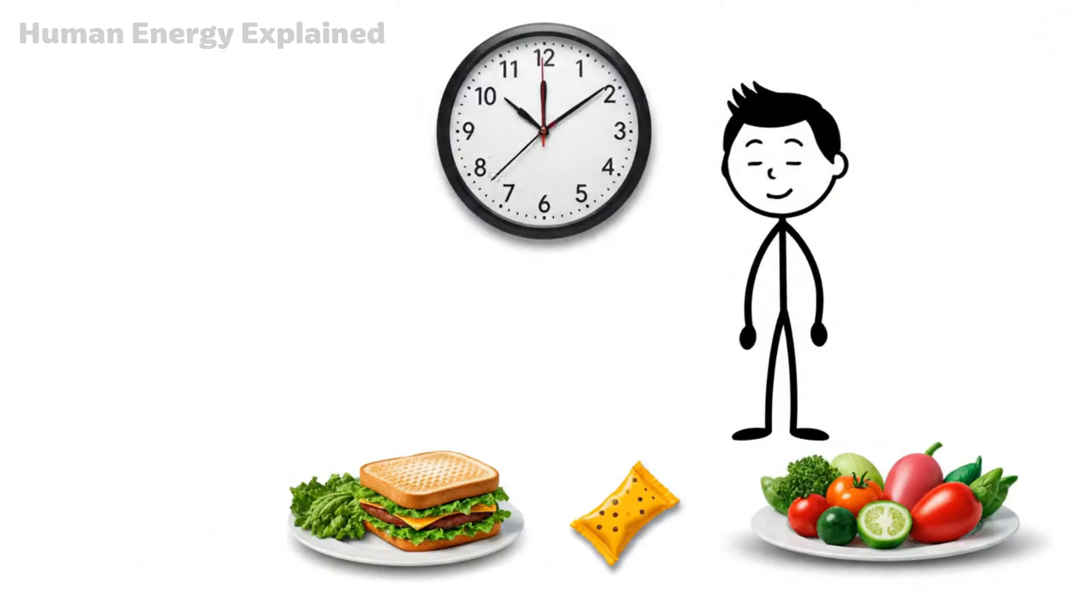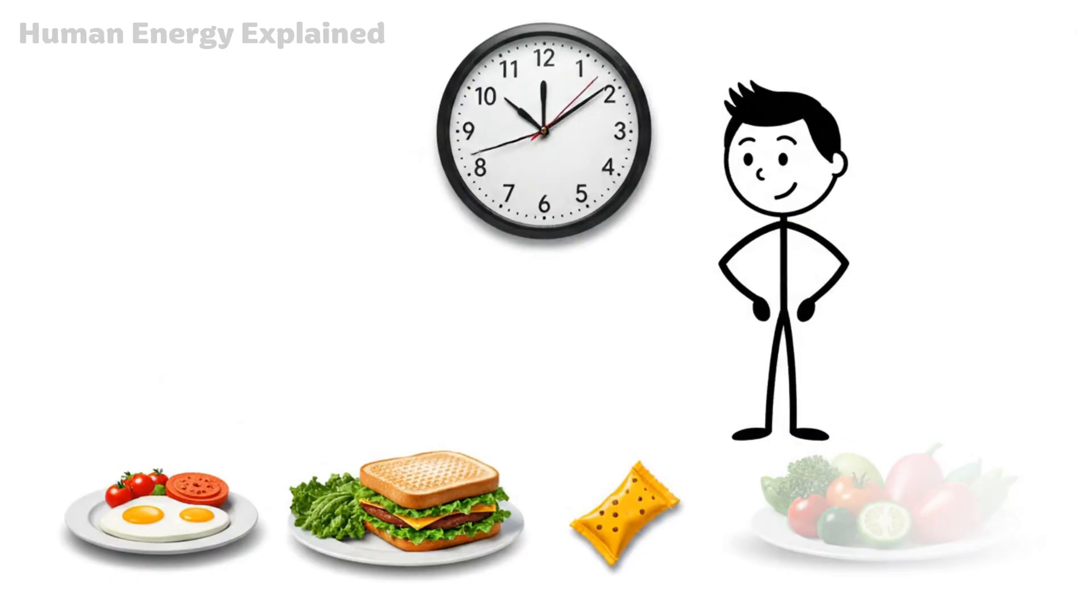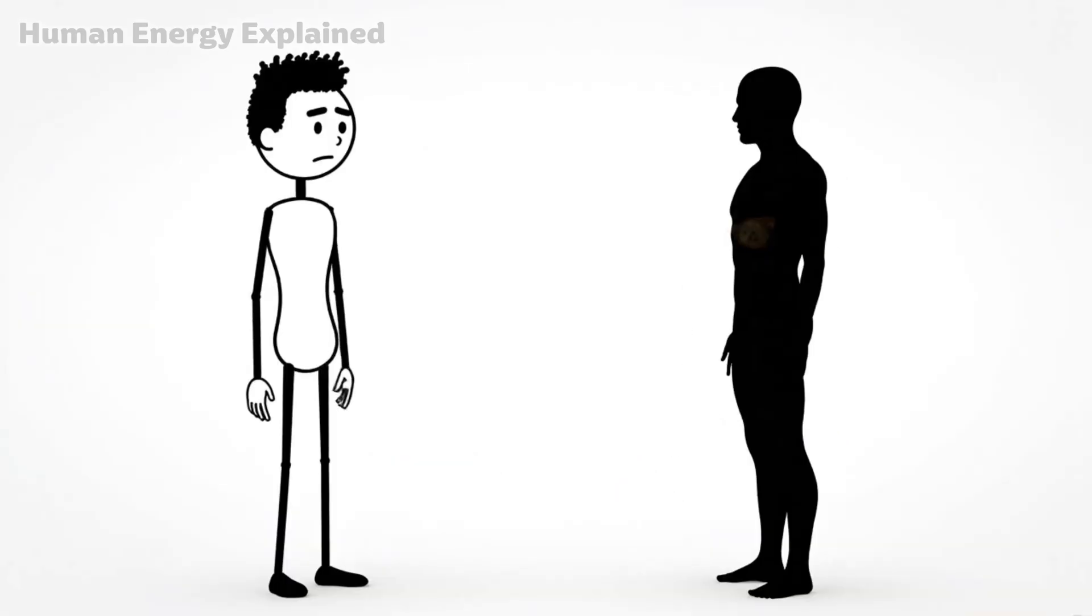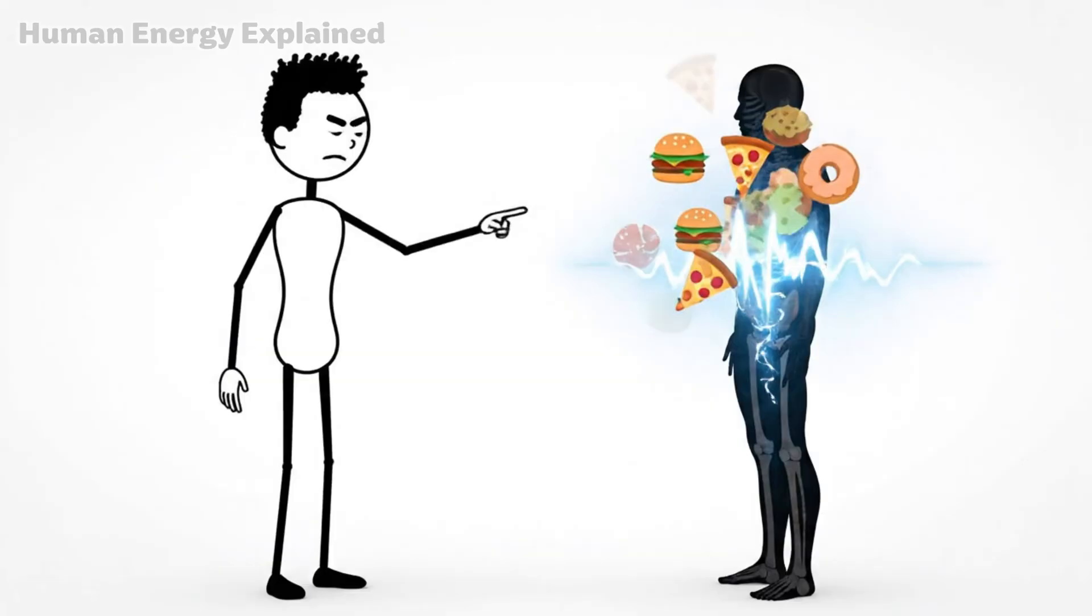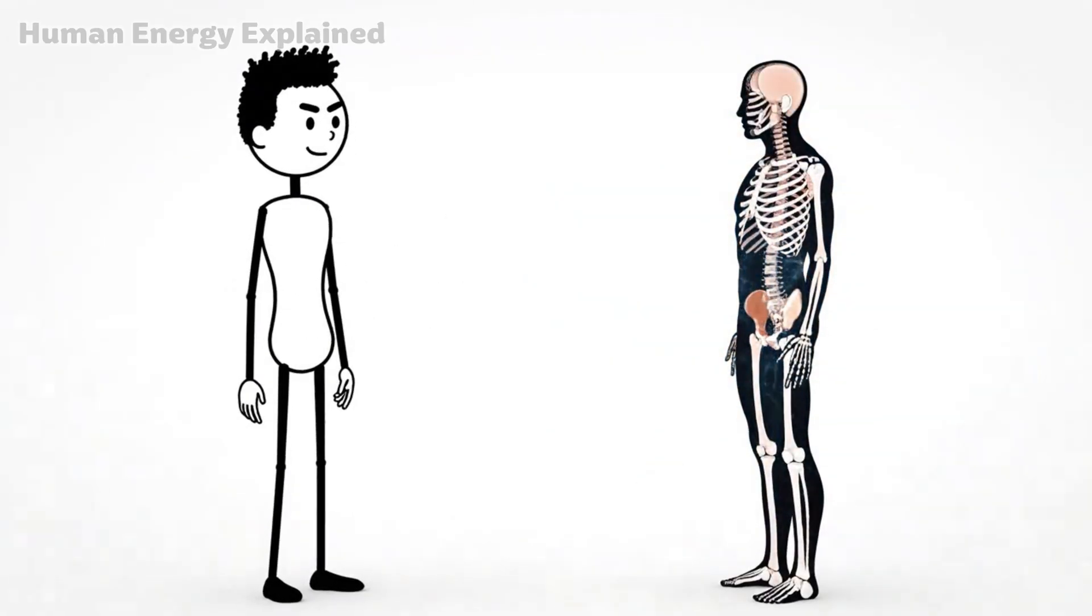You've trained it to expect food at certain times. Breakfast at 7. Lunch at noon. Maybe a snack at 3. Dinner at 7. These aren't biological necessities. They're learned habits. And now you're breaking every single one of them.